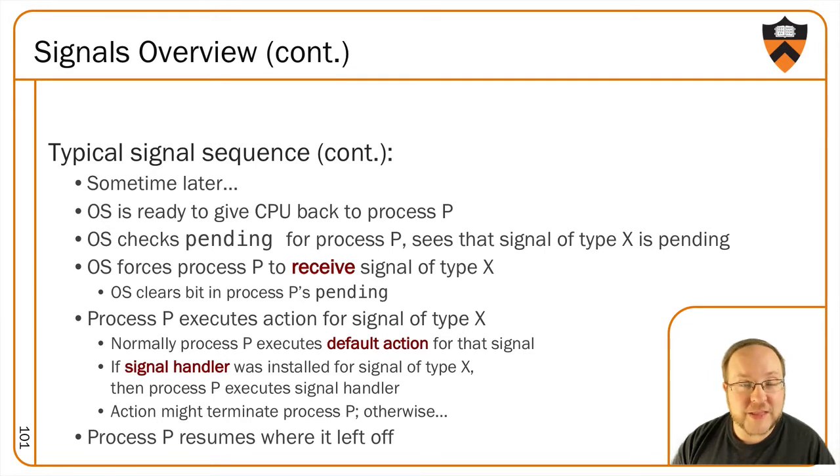If P survives the signal, that is, the either default behavior wasn't to terminate, or there was a custom handler that didn't terminate, P will continue executing as normal after the signal handler completes. So this means that you can think of handling the signal, in the case where the process doesn't terminate, as only a temporary step away from the normal control flow. But it is a step away from the control flow nonetheless.